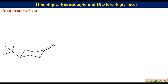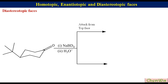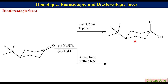For 4-tert-butylcyclohexanone reacting with NaBD4, top face attack — that is axial attack — puts deuterium axial, forcing oxygen to be equatorial, leading to structure A. Bottom face attack leads to structure B. Structures A and B are not mirror images of each other and thus are diastereomers. So the two faces of the carbonyl group in 4-tert-butylcyclohexanone are diastereotopic.